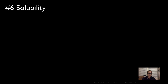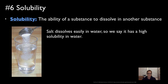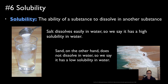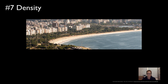Physical property number six is solubility — the ability of a substance to dissolve into another substance. For example, salt dissolves easily into water, so we say salt is highly soluble in water. Sand, on the other hand, is not easily soluble in water, so it has low solubility. That brings us to our last physical property, number seven: density.